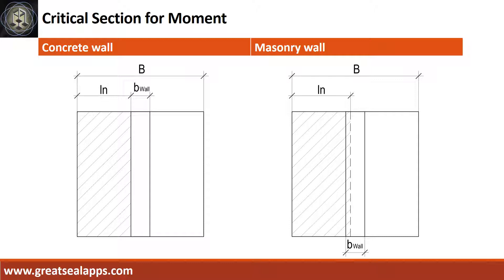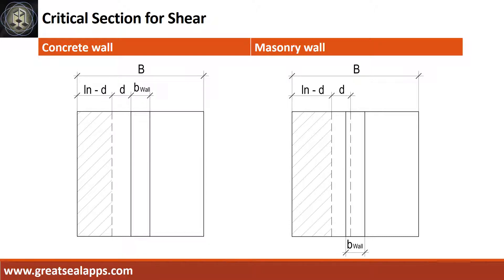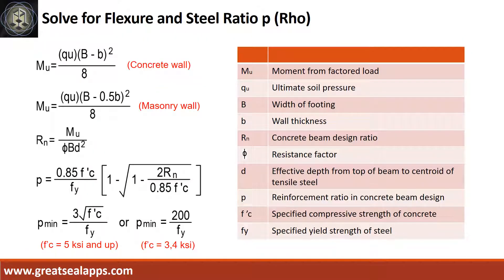Critical section diagrams for moment evaluation. Critical section diagrams for shear evaluation. Solve the maximum moment of either concrete or masonry wall, then get the concrete beam design ratio RN to solve the reinforcement ratio rho and check against ACI minimum.